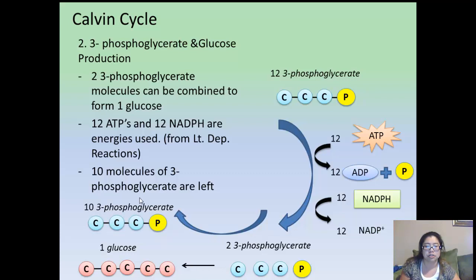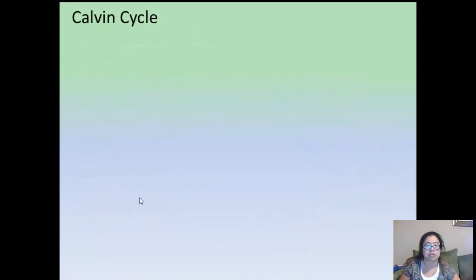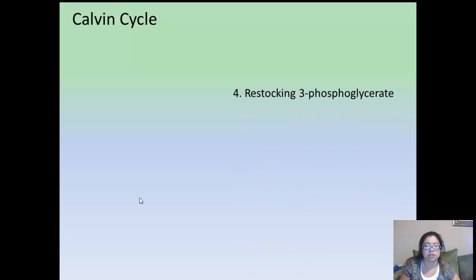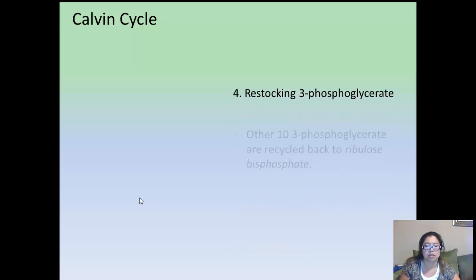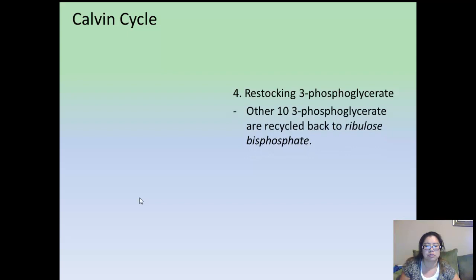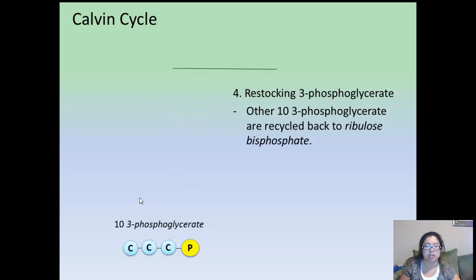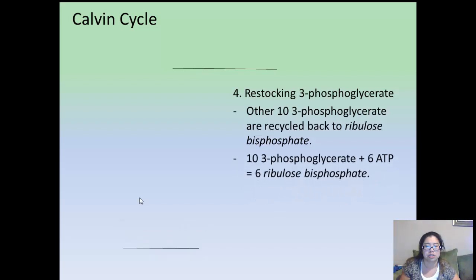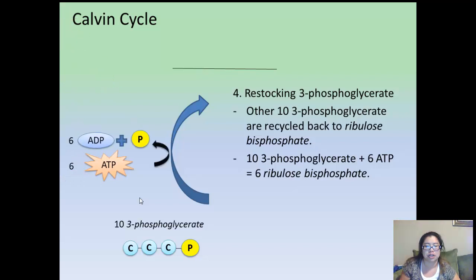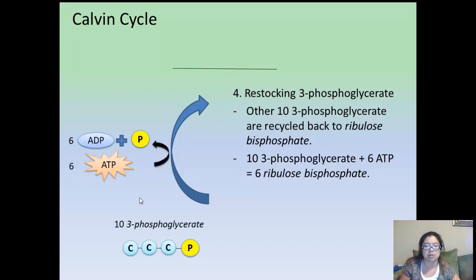With the ten remaining 3-phosphoglycerates, we move to the third step: restocking the ribulose-biphosphate. The ten 3-phosphoglycerates are recycled back into the ribulose-biphosphate group. Ten 3-phosphoglycerates with six ATPs will make six ADPs with phosphorus, and you'll end up with six ribulose-biphosphates again — the five-carbon sugar. This is the last step of the Calvin Cycle.